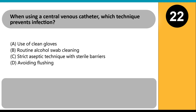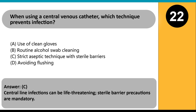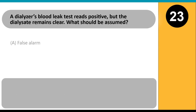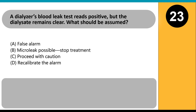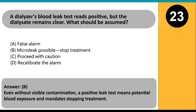When using a central venous catheter, which technique prevents infection? A. Use of clean gloves. B. Routine alcohol swab cleaning. C. Strict aseptic technique with sterile barriers. D. Avoiding flushing. Answer C. Central line infections can be life-threatening; sterile barrier precautions are mandatory. A dialyzer's blood leak test reads positive, but the dialysate remains clear. What should be assumed? A. False alarm. B. Microleak possible — stop treatment. C. Proceed with caution. D. Recalibrate the alarm. Answer B. Even without visible contamination, a positive leak test means potential blood exposure and mandates stopping treatment.